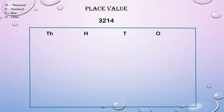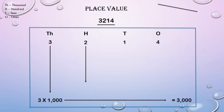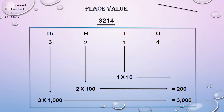Now let us try to solve one more example. Number 3,214. Let us place each digit in its respective place. 3 goes in the 1000's column, 2 goes in the 100's column, 1 in the 10's column, and 4 in the 1's column. The place value of 3 is 3000, of 2 is 200, of 1 is 10, and of 4 is 4.